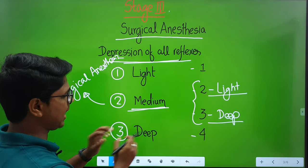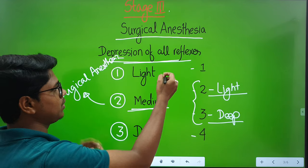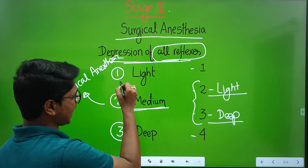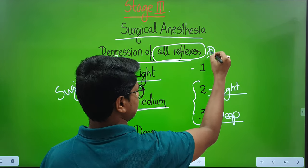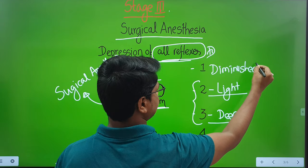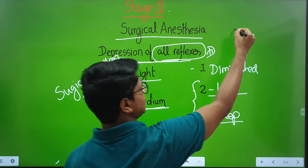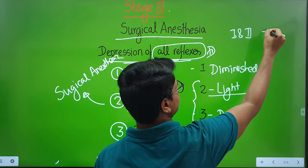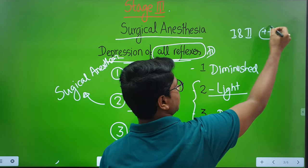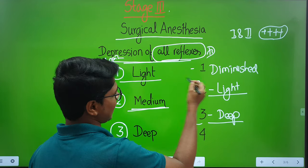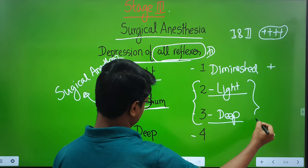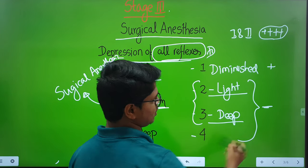All the reflexes will be diminished or absent. Usually in the light plane you will find diminished reflexes. If I give a plus rating — in Stage 1 and 2 all the reflexes are normal or at 3-plus. In the light plane, you may find single plus — they will be very diminished. In the medium plane and deep plane, the reflexes will be absent.